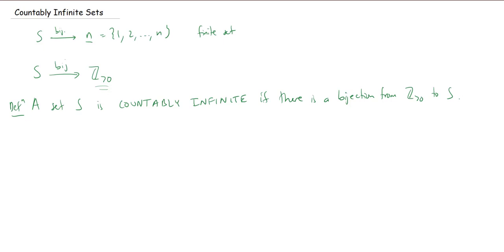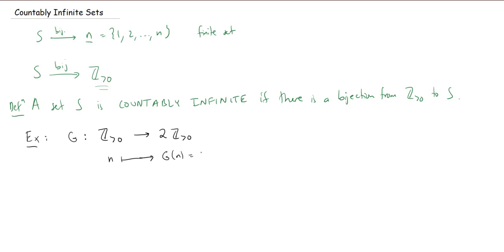Let's do an example — this is based on an example we had before. Let's say I have a function g going from the positive integers to the even positive integers, where multiplying by 2 means we get all the even positive integers. So if I had some little n, some positive integer, I'm going to map that to g of n, which is defined as doubling the number: you get 2 times n. We saw in a previous video this is a bijection.